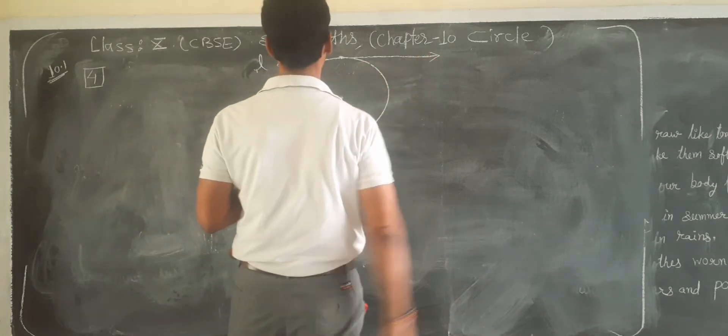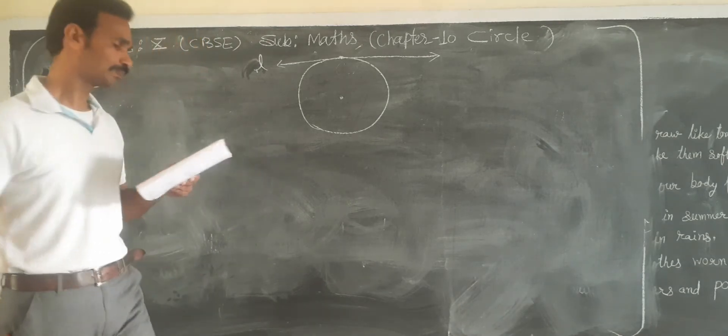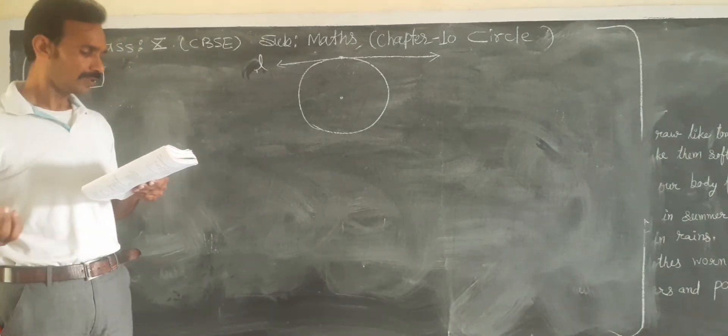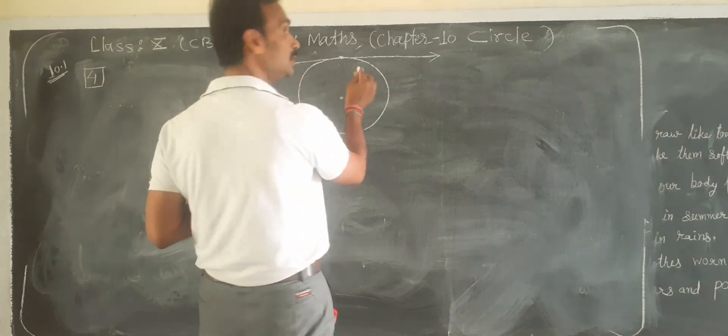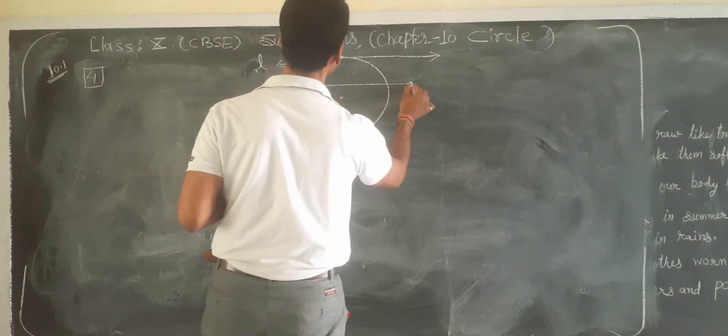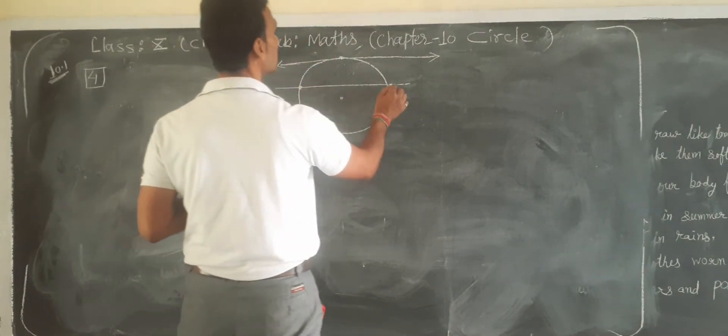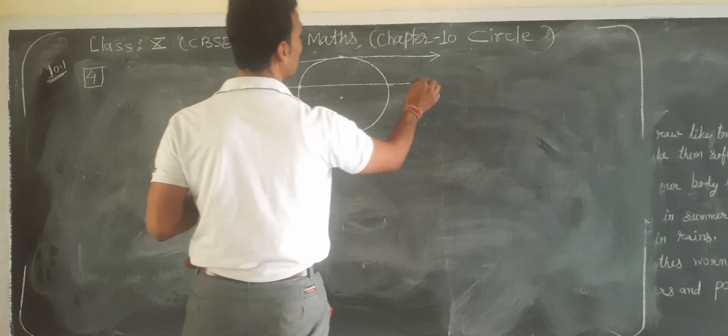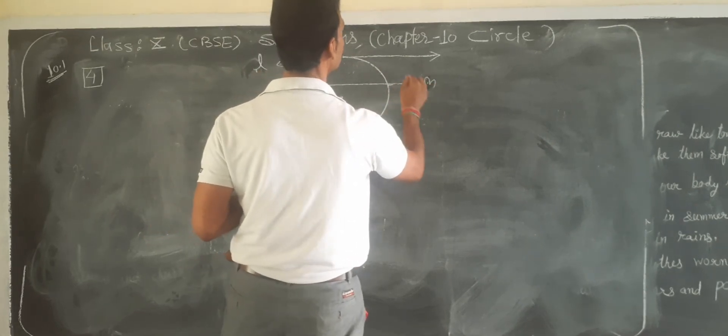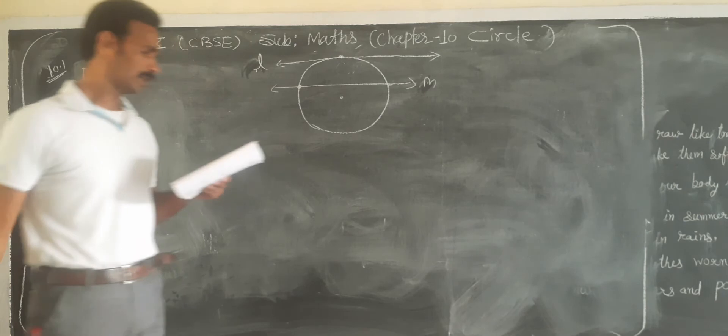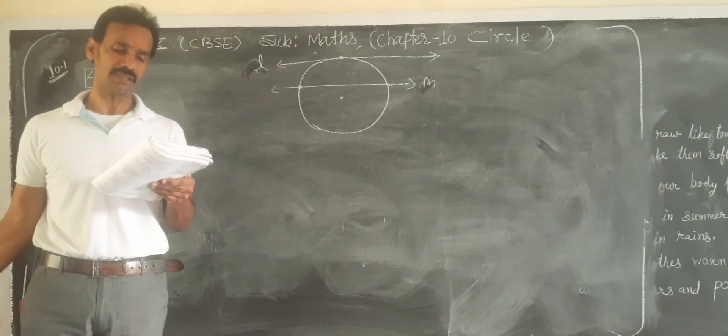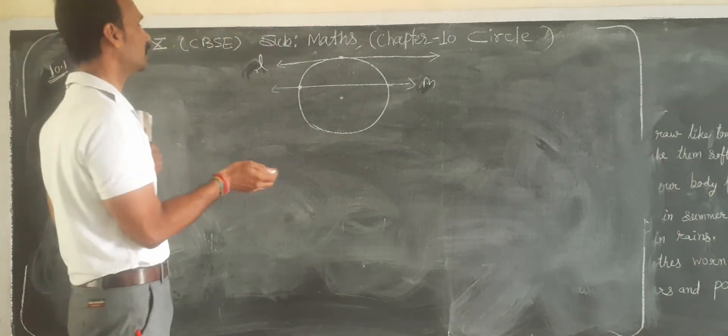And one is tangent and the other is secant. So this is the second one. This is A, so M, and secant with a circle.